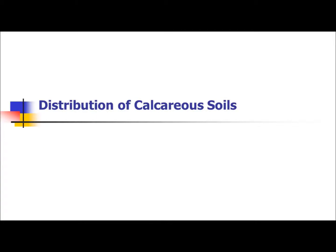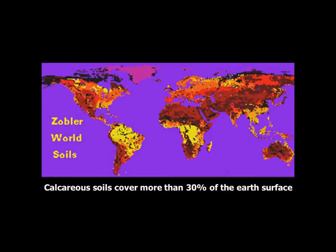How prevalent are calcareous soils? So far there is really no soil map to indicate calcareous soils specifically. But in general estimates, calcareous soils cover about 30% of Earth's surface — that's a lot. You can find calcareous soils anywhere in the world.